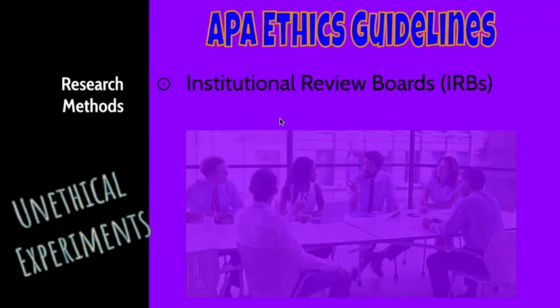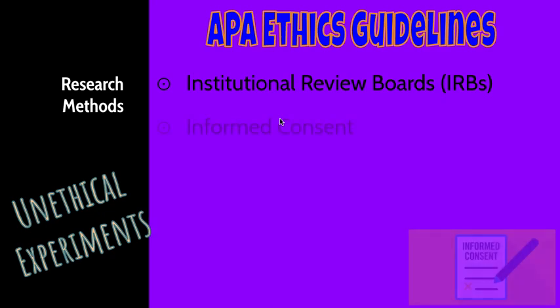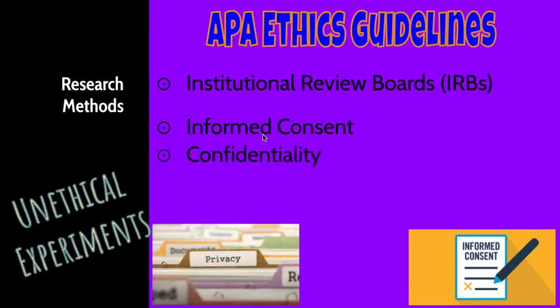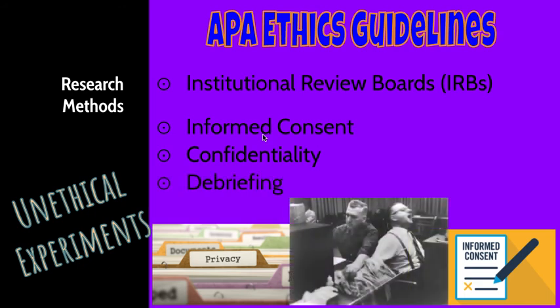The last thing is guidelines. We talked about all those really bad experiments where people were mentally or physically harmed. The American Psychological Association has come up with guidelines to follow when running an experiment. You have to get your experiment approved by an IRB — an institutional review board. You have to give informed consent, meaning you give participants enough information for them to decide if they want to participate. You have to give confidentiality — you can't publish results with everyone's names and embarrass people. And if there's any deception involved, which some experiments require, you have to debrief participants afterwards and tell them what was actually going on.